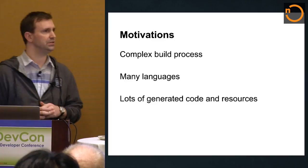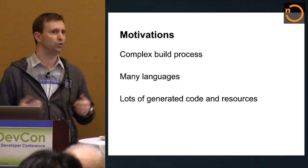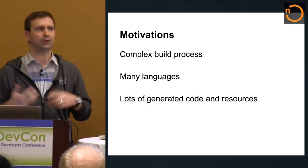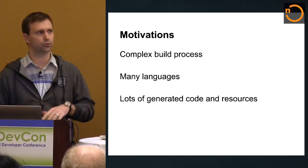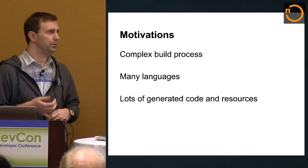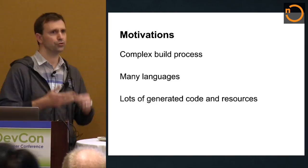It's interesting to look at the motivation we had when we designed Gradle, when we designed the new build system based on Gradle. Android is a very complex build system. It may not look like it, but we have a lot of languages: Java, native code, AIDL, RenderScript. Resources aren't really a language, but AIDL, RenderScript, and the resource mechanism all generate code. So that's complicated.